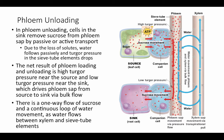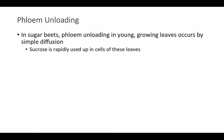There's a one-way flow of sucrose from source to sink, but also a continuous loop of water movement as water flows between the xylem and the sieve tube elements.